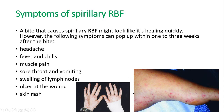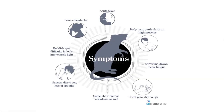As you can see, there is a picture of the skin rash on the hands and feet. Here are some other symptoms of this disease: acute fever, body pain particularly on thigh muscles, drowsiness and fatigue, chest pain, dry cough, mental disturbance, nausea, diarrhea, reddish skin, and sore headache.